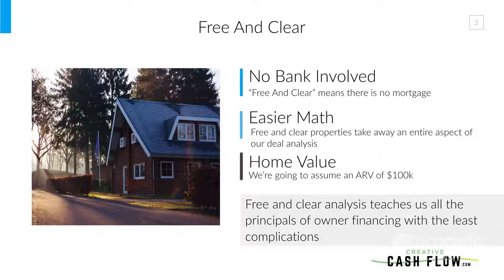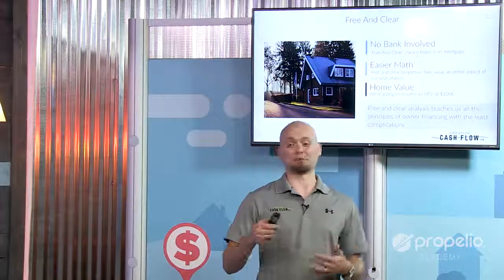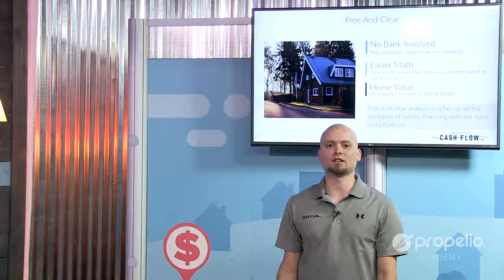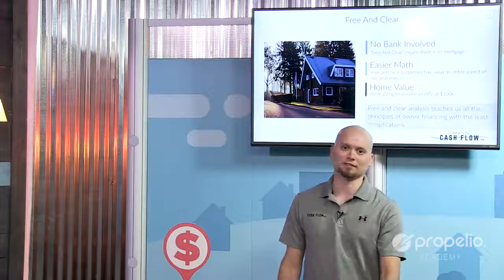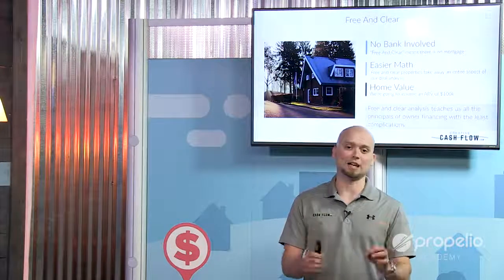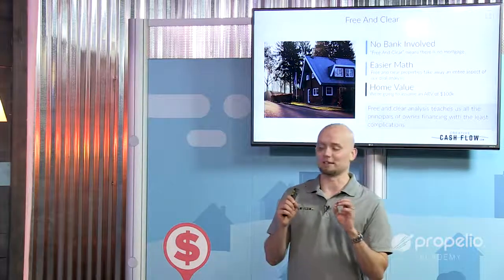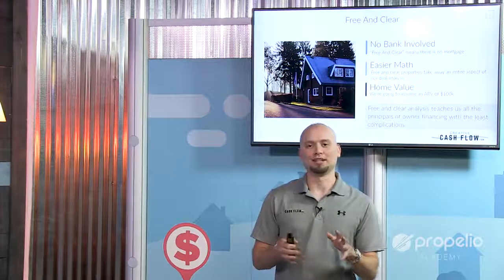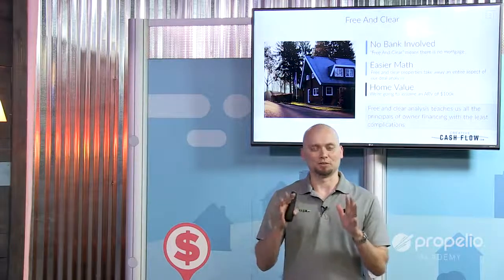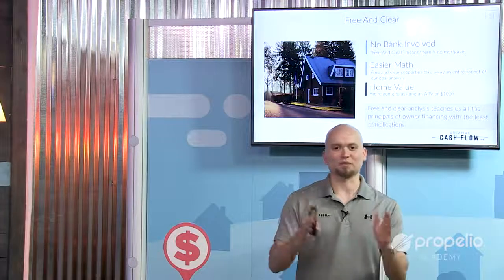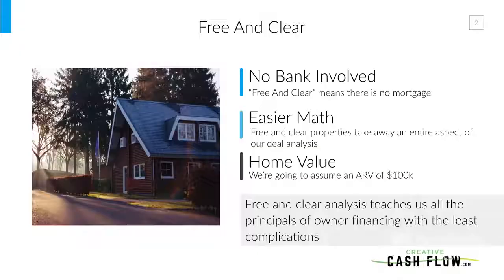The home value we're going to assume on this deal is going to be an ARV of $100,000. I like using $100,000 because when I throw percentages at you, you just take whatever number I said and add 'thousand' to it. If I say it's going to be 75% of $100,000, well it's a $75,000 amount. That's something a lot of people don't quite grasp, so just remember: whatever percentage I say, add a thousand to it — that's the right number.